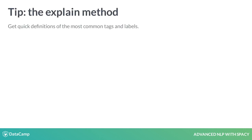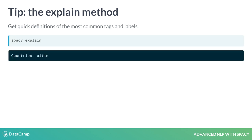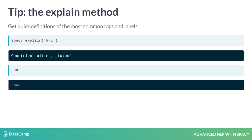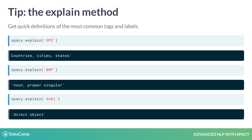A quick tip: to get definitions for the most common tags and labels, you can use the spaCy.explain helper function. For example, 'GPE' for geopolitical entity isn't exactly intuitive, but spaCy.explain can tell you that it refers to countries, cities, and states. The same works for part-of-speech tags and dependency labels.